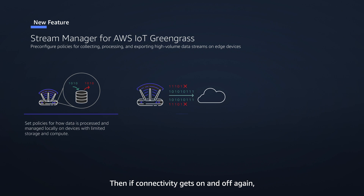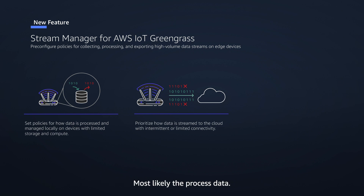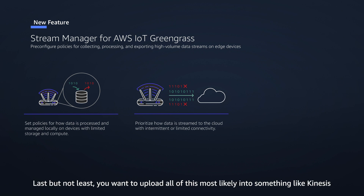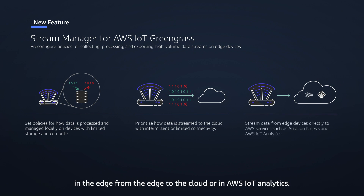Then, if connectivity goes on and off, which of the data processed locally at the edge would you like to upload first? Most likely the processed data. And when you have lower connectivity, maybe you can wait for some of the raw data. Last but not least, you want to upload all of this — most likely into something like Kinesis, from the edge to the cloud, or into AWS IoT Analytics. That's all what the stream manager does for you.